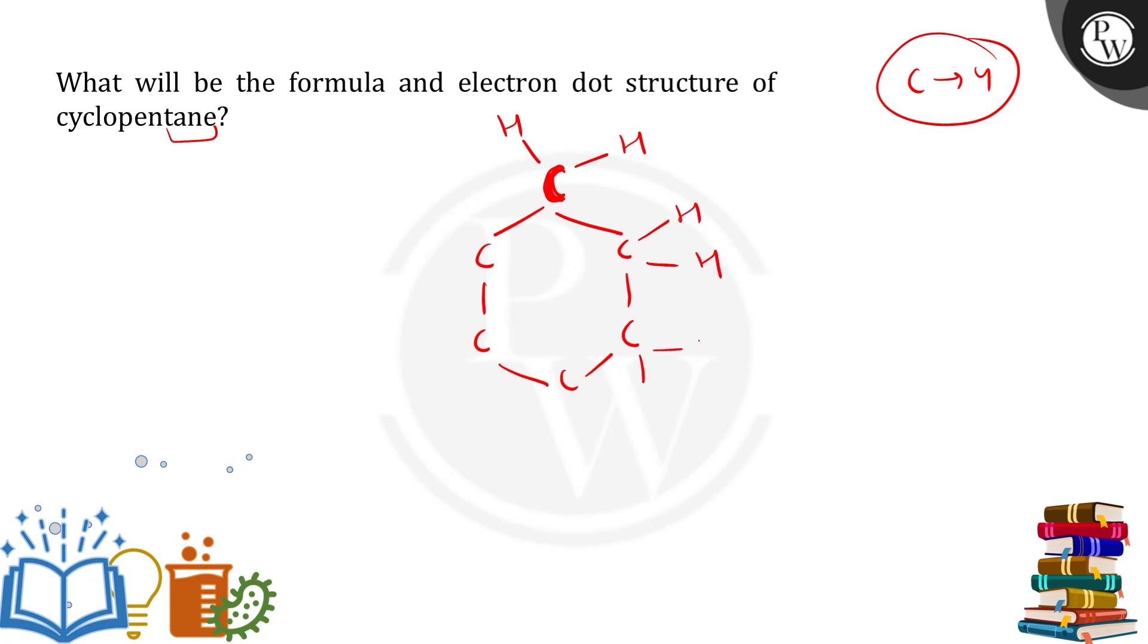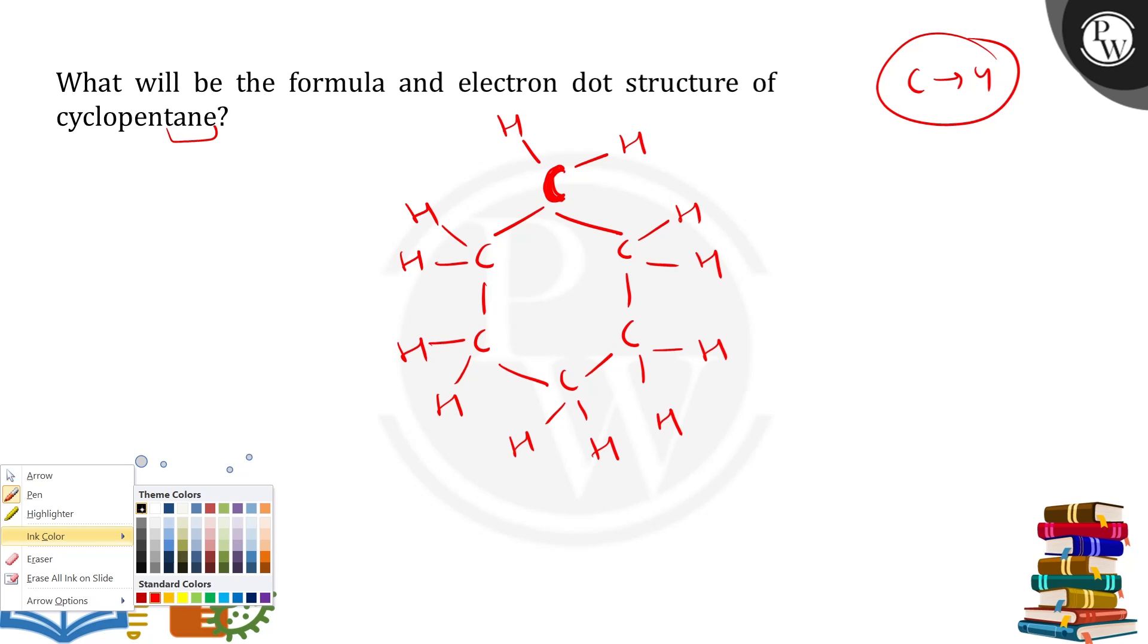Now, we have to make 4 valencies for each carbon atom.